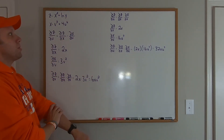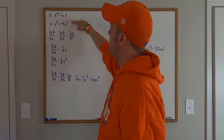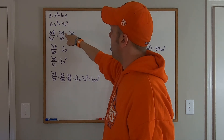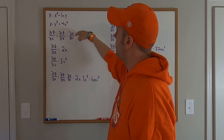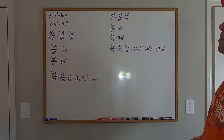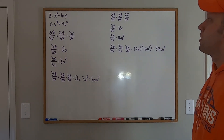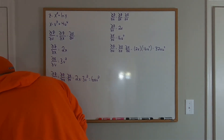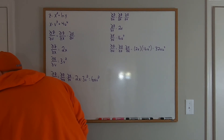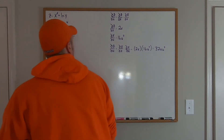When it comes to the chain rule for partial derivatives, we have all our functions written out and listed. First, figure out what the chain of derivatives needs to be. Once we know that, we can take derivatives line by line and multiply them together. It looks bizarre at first, but it's really not all that bad.